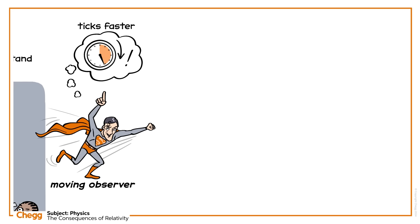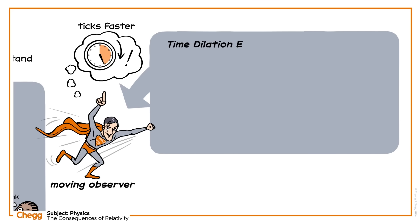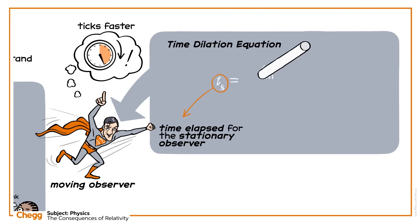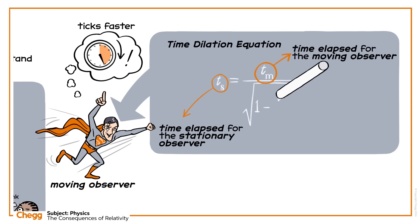The relationship between the time elapsed for the stationary observer and the time elapsed for a moving observer can be related by this time dilation equation. Ts, the time elapsed for the stationary observer, is equal to Tm, the time elapsed for the moving observer, divided by the square root of 1 minus v squared over c squared, where v is the relative velocity between the two observers, and c is the speed of light in a vacuum.